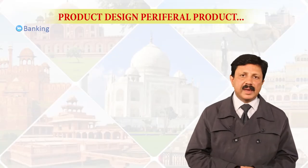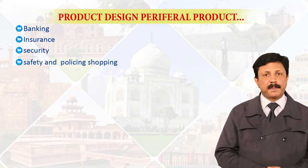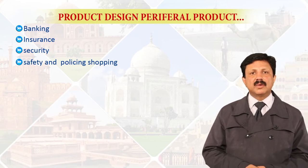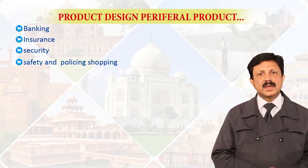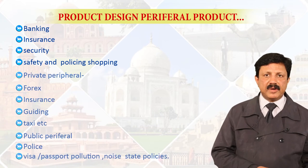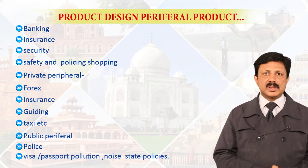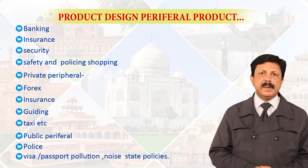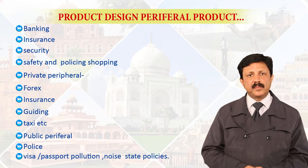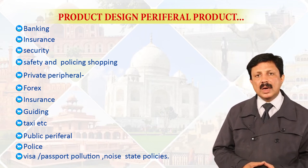The peripheral product may include banking, insurance, security, safety, policing, and shopping. These are part of the tourism peripheral product. Further, they can be categorized as private peripheral and public peripheral — like visa and policing, which are public or government policies, called the public peripheral product. As a marketer while designing the product, we have to keep in mind what sort of product this is and who the customers are.